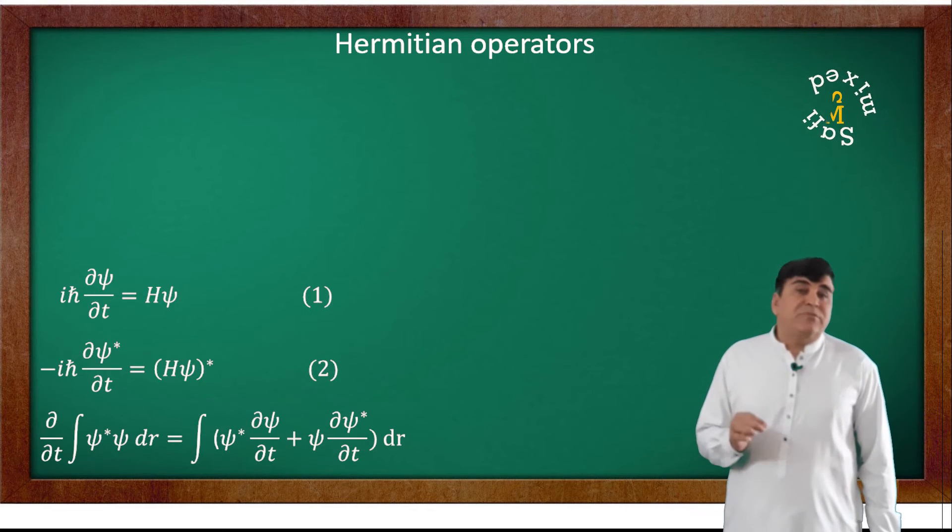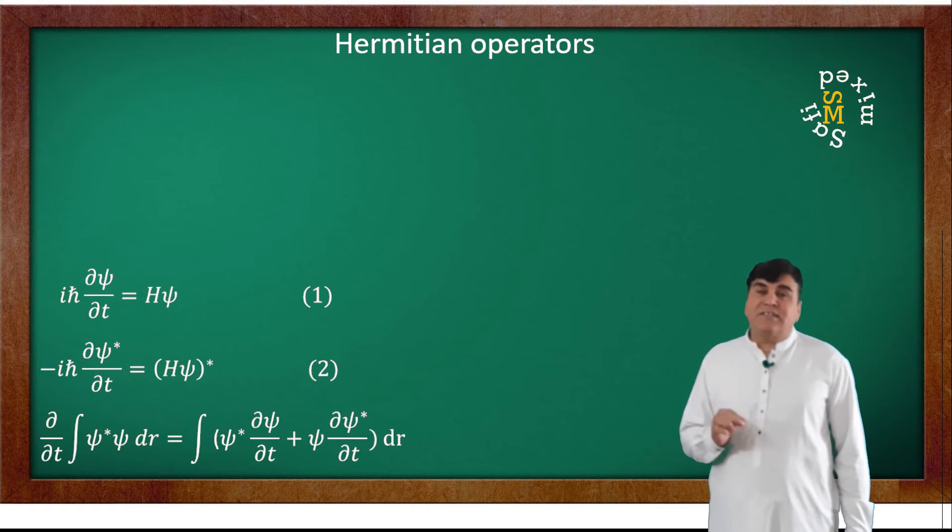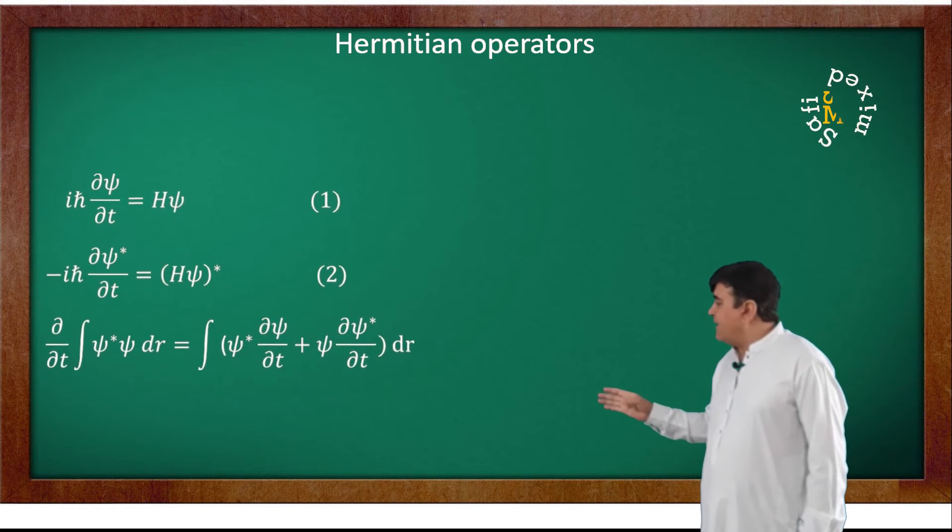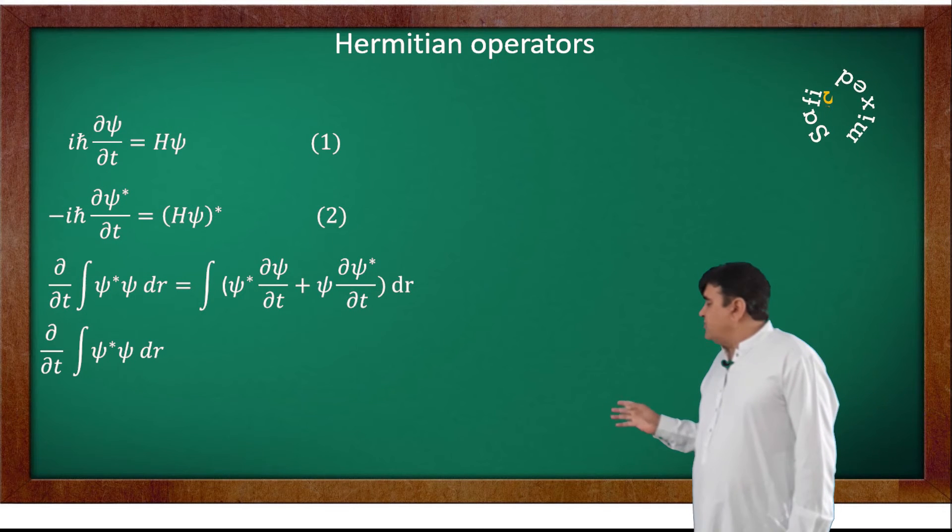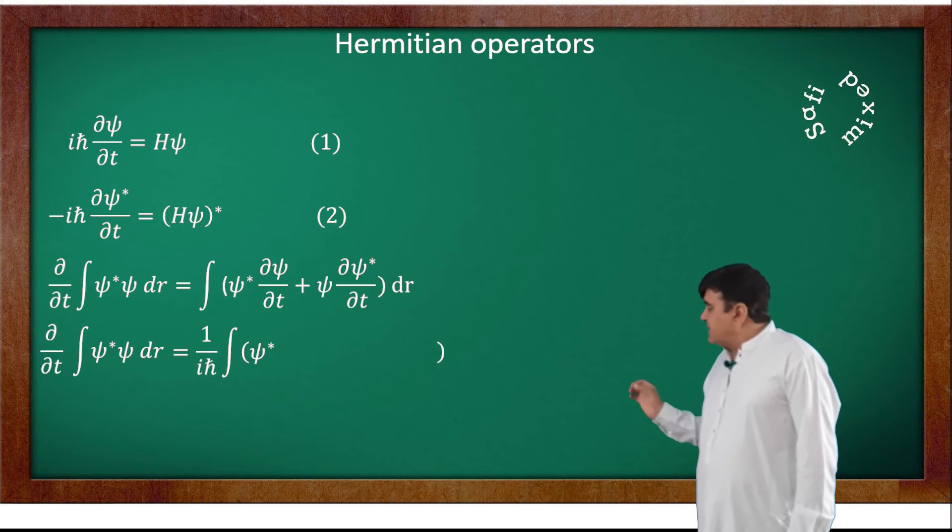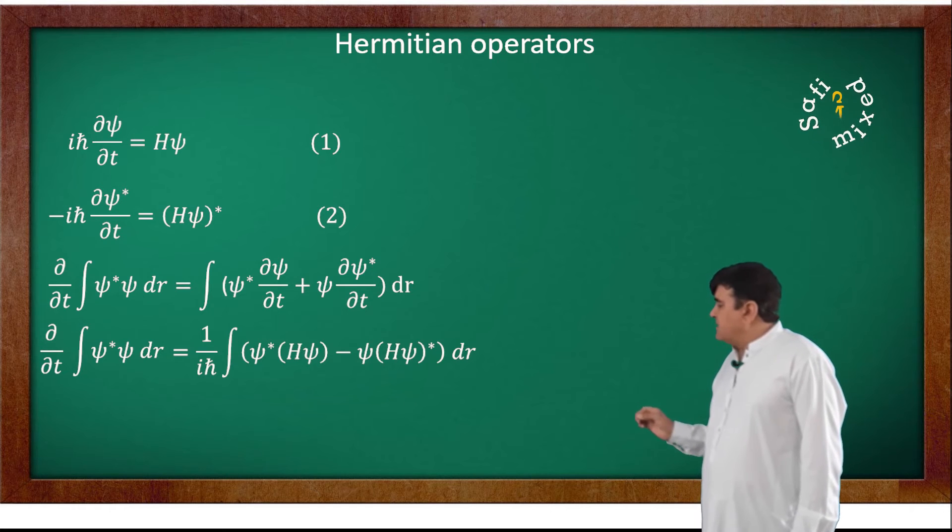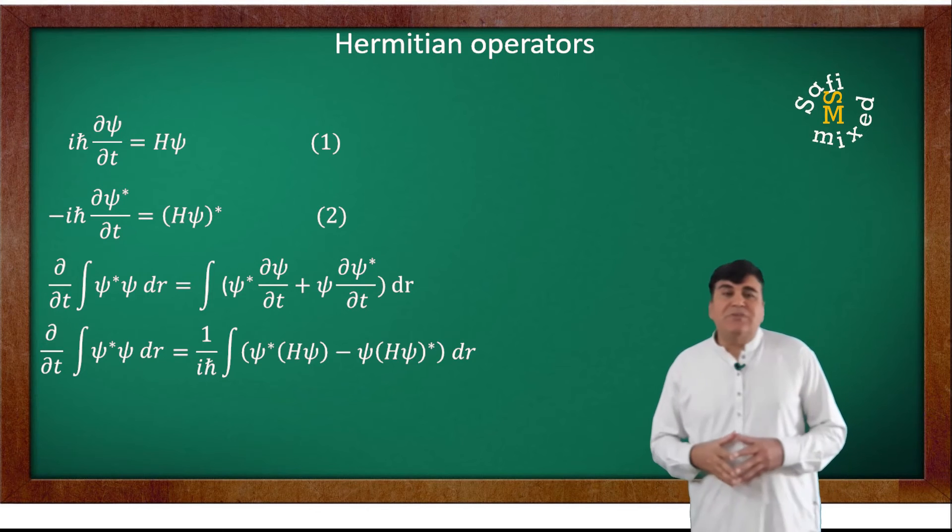If I substitute the values of ∂ψ/∂t and ∂ψ*/∂t from the above two equations, I can write the result as 1/(iℏ) ∫(ψ*Hψ - ψ(Hψ)*) dr.